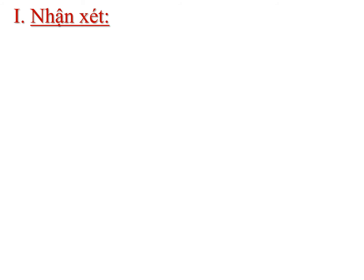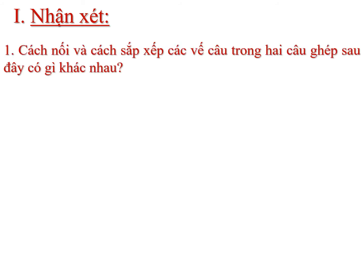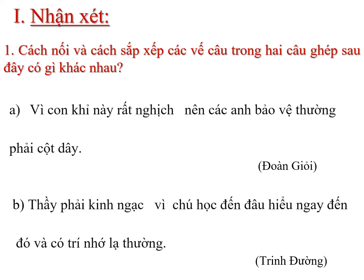Bây giờ cô cho mình cùng nhau đi hình thành kiến thức mới của bài học ngày hôm nay. Bài 1: Nhận xét cách nối và cách sắp xếp các vế câu trong hai câu ghép sau đây có gì khác nhau? Câu A: Vì con khỉ này rất nghịch nên canh bảo vệ thường phải cột dây. Câu B: Thầy phải kết ngạc vì chú học đến đâu hiểu ngay đến đó và có trí nhớ lạ thường. Đầu tiên ta phải xác định được yêu cầu đề bài. Cô đã gạch chân dưới những từ ngữ chúng ta cần lưu ý.